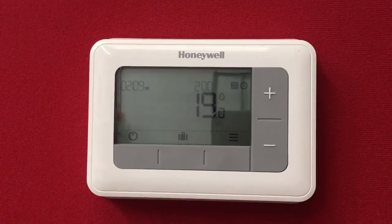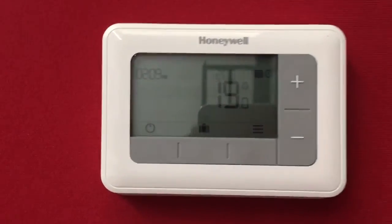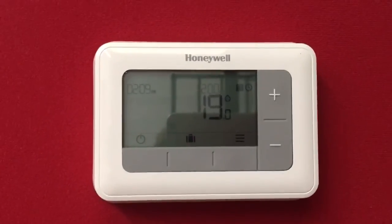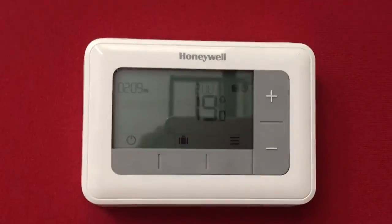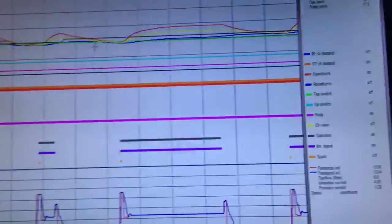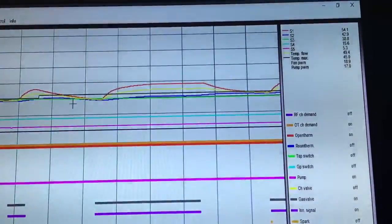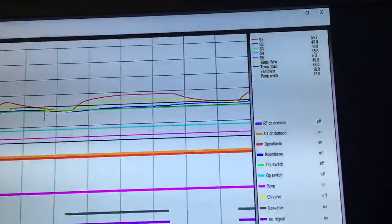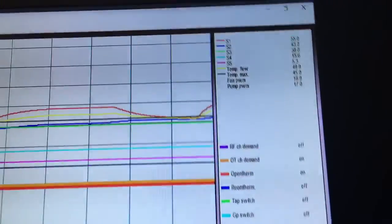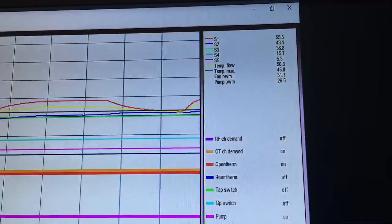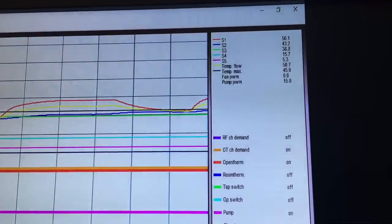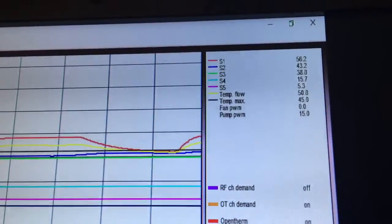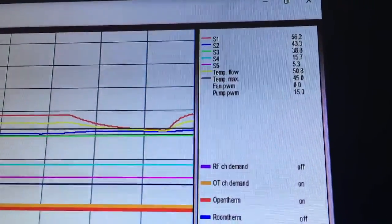And this is through an Intergas Eco RF 24 boiler. If I just show you the graphs that we currently got up the top, so if you look at the top here you can see with the outside temperature compensation controlled, I've turned off the room compensation on the device.